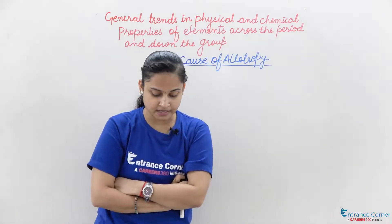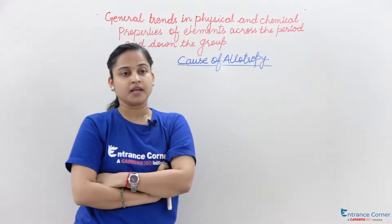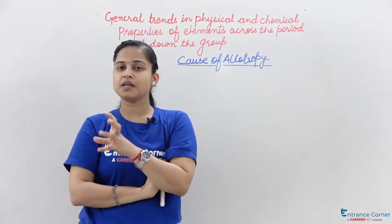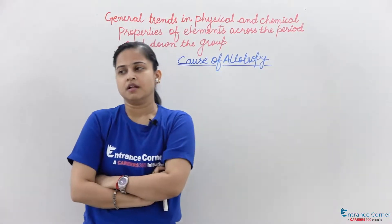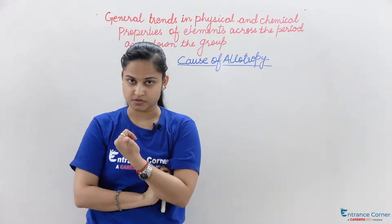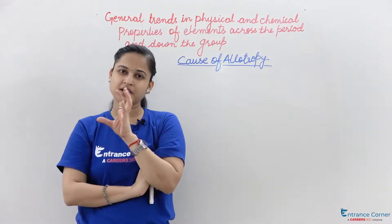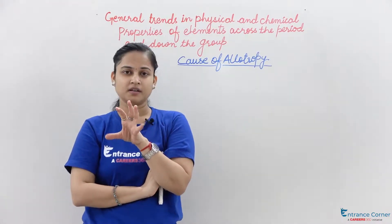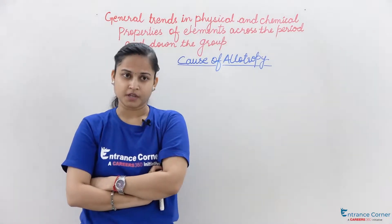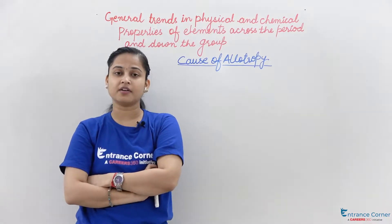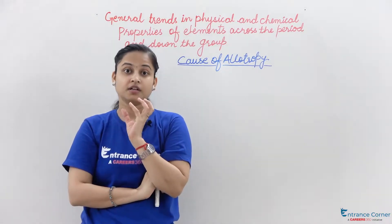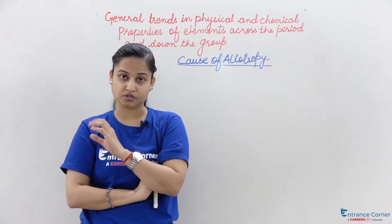So basically, the cause behind allotropy is the different arrangement of atoms — the different arrangement of atoms is the cause behind allotropy. Moreover, there is also a difference in crystalline structure.